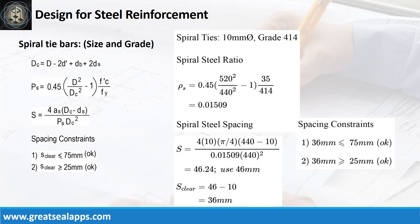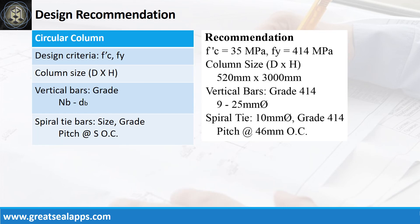The spiral steel ratio ρs equals 0.01509, for a spiral pitch of 46 mm. Design recommendation: f'c = 35 MPa, fy = 414 MPa. Column size: 520 mm diameter by 3,000 mm. Vertical bars: grade 414, 9 pieces of 25 mm bar. Spiral tie: 10 mm bar grade 414, pitch at 46 mm on center.